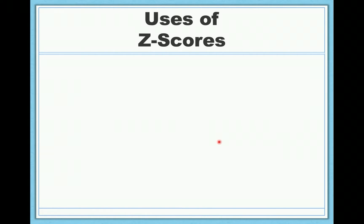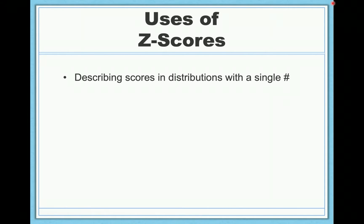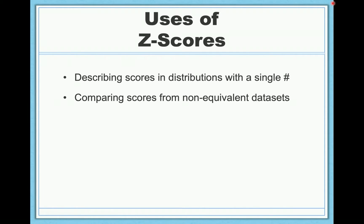Z-scores are useful for describing scores in distributions with a single number. It factors out the means and the variability, removes the necessity of knowing all the information about the original data, and becomes something easily interpretable and standardized. I can tell you the z-score of anything and you'll automatically understand how to interpret that value — so it's a really nice tool.